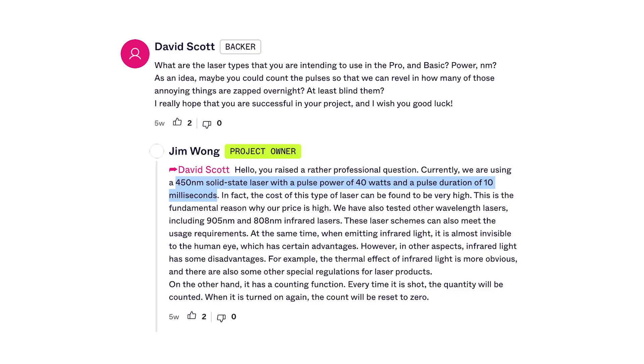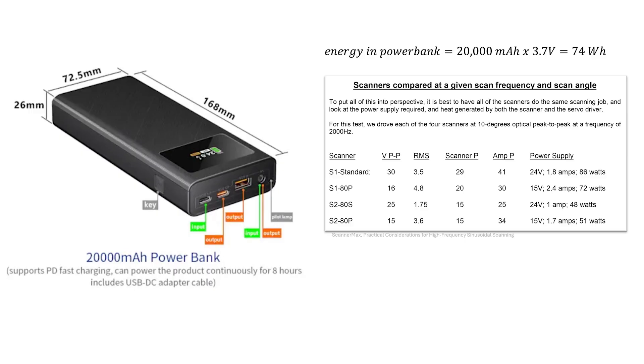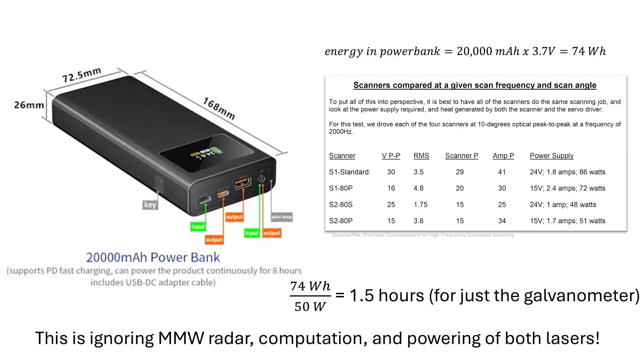I don't want to make this video too long, but let's quickly touch on some other concerns I have. Starting with power consumption, photon matrix claims it can run on a 20,000 milliamp hour power bank for eight hours. Let's do some super rough math here. Assuming that this is a lithium ion power bank, the nominal voltage is 3.7 volts. This means that it holds about 74 watt hours of energy. If you have a galvo running pretty fast, it uses something like 50 watts, so that only gets you about 1.5 hours of use. And that's ignoring all the other things, like the millimeter wave radar that has to run all the time, any computation, and powering either of the lasers. One of which is a 40 watt laser, remember? I just don't see how you can get eight hours of battery time, and I'd be shocked if you could even get a full hour out of it.